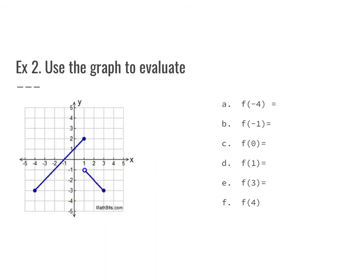For this example, instead of having the equation we have the graph. There are two pieces: from x equals negative 4 to x equals 1 we have the top piece, and from x equals 1 to x equals 3 we have the second piece. When evaluating our function, we'll use the graph directly.